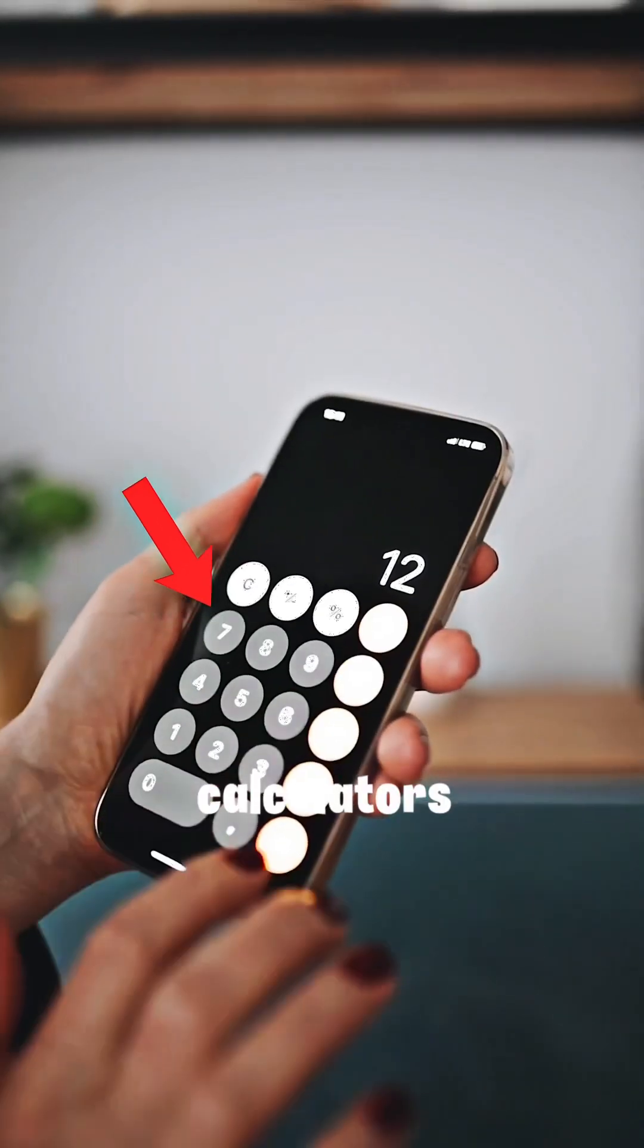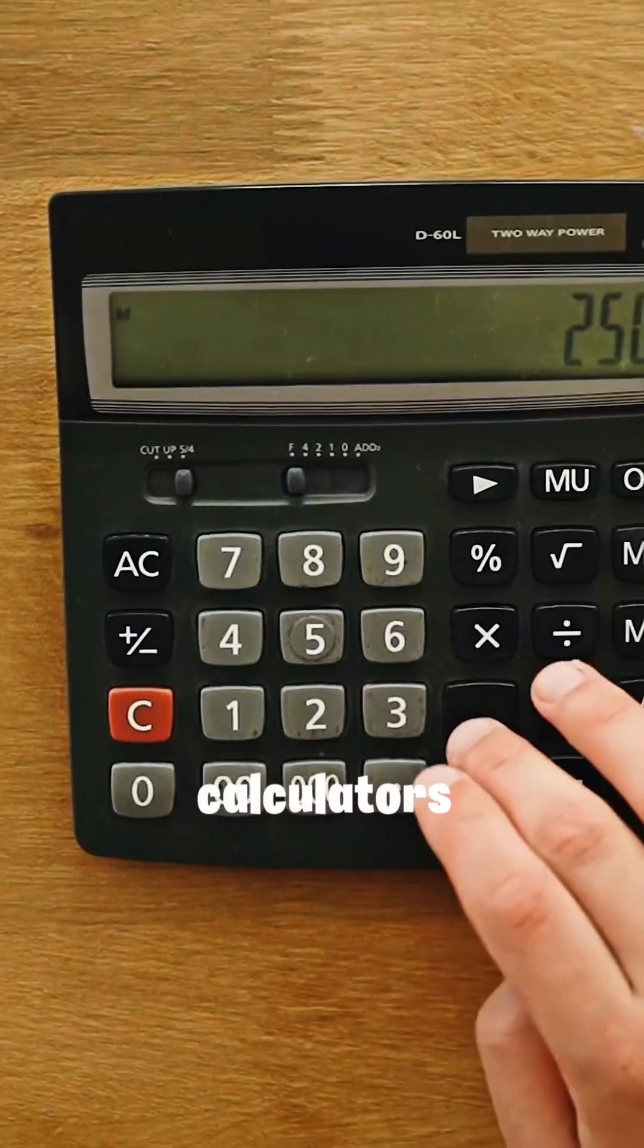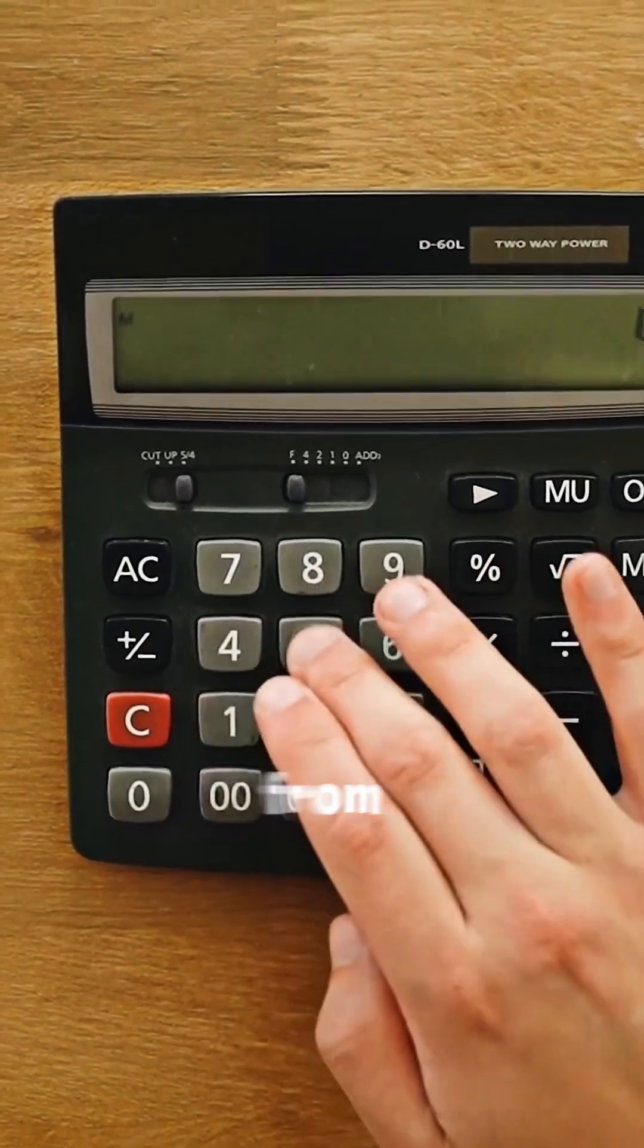Ever noticed how phone keypads and calculators have completely different layouts? Calculators came first, with numbers starting from 7 at the top.